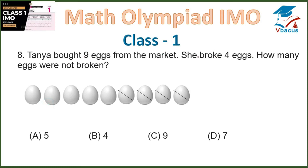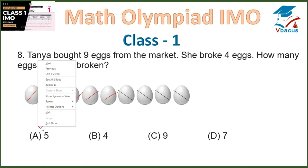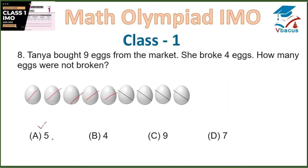Question 8: Tanya bought 9 eggs from the market. She broke 4 eggs. How many eggs were not broken? Let us count the eggs which are not broken: 1, 2, 3, 4, 5. So 5 is the answer. Option A is correct.